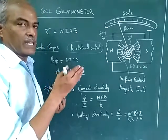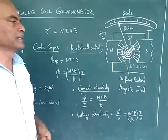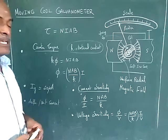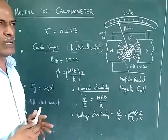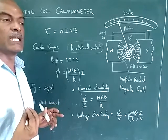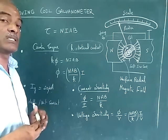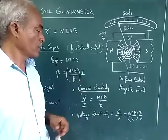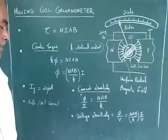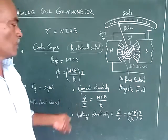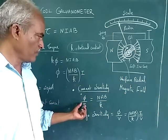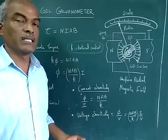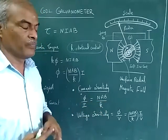Generally, if you purchase a moving coil galvanometer, the galvanometer current is roughly around 20 to 50 microamps — less than 50 microamps — so it is highly sensitive and must be handled with great care. We define current sensitivity as the deflection per unit current. That is φ / I, which gives NAB / k.